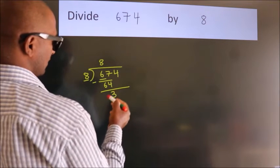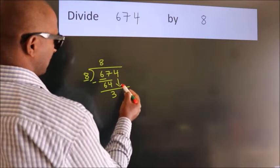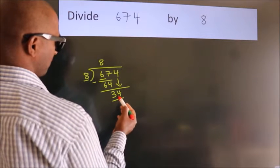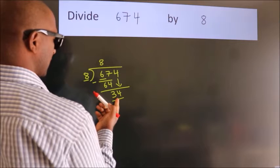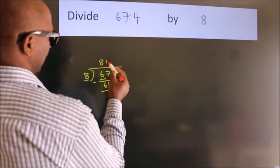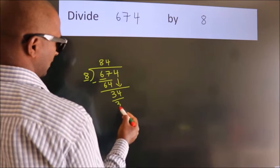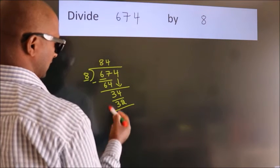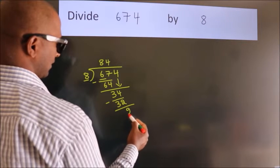After this, bring down the next number. So 4 down. So 34. A number close to 34 in the 8 table is 8 times 4 equals 32. Now we subtract. We get 2.